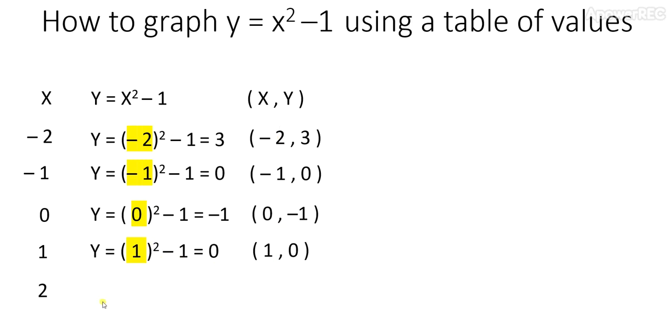And lastly, if x is 2, y equals 2 squared minus 1. 4 minus 1 is 3, and therefore the point is 2 comma 3. That's step 1. Step 2. We're going to plot the five key critical points on our x, y Cartesian plane.